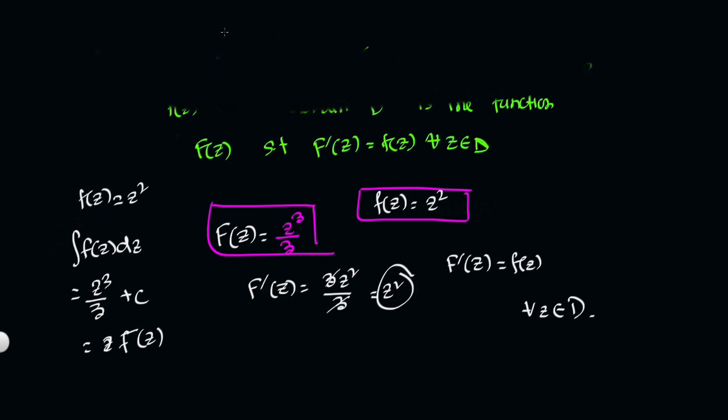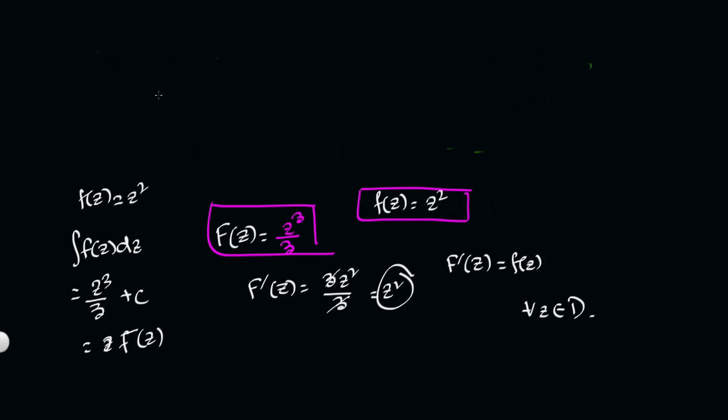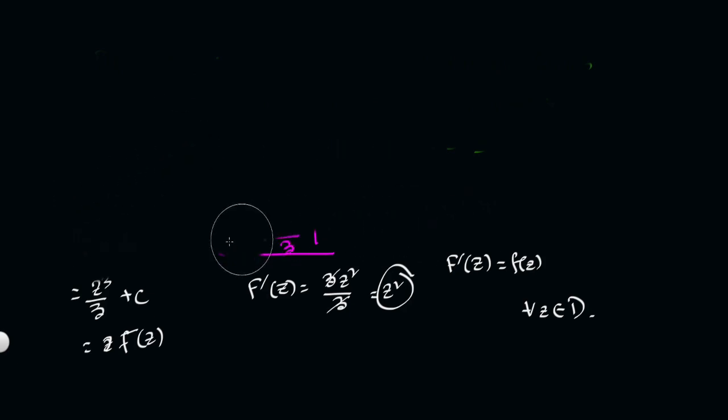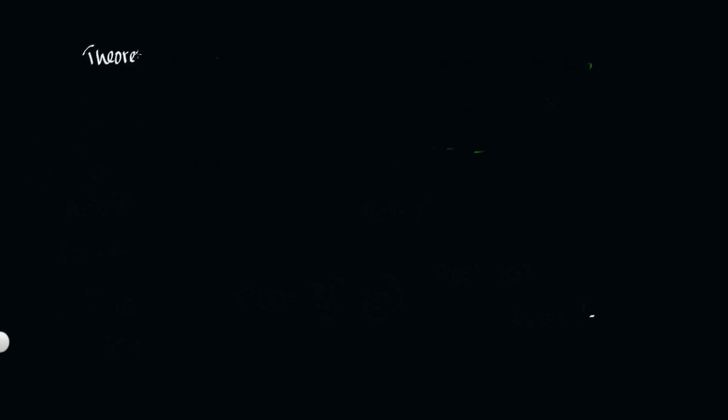Now moving to the theorem related to anti-derivatives. We need to prove the theorem and look at the equivalent statements. If you have any doubts you can ask in the comment section. Let us take a theorem which is related to anti-derivative and examine what the equivalent statements are.